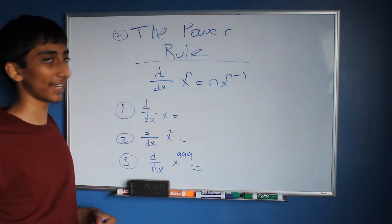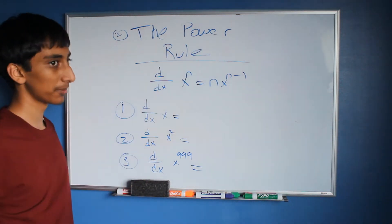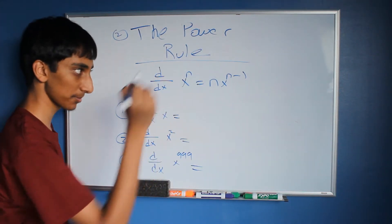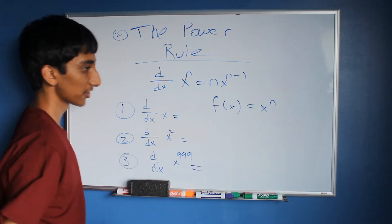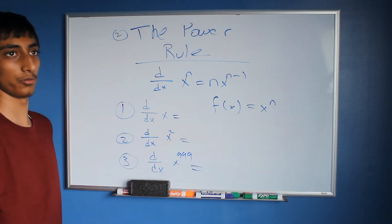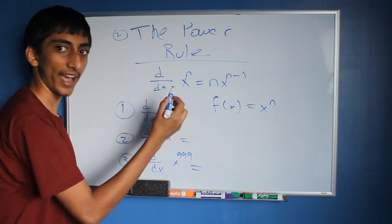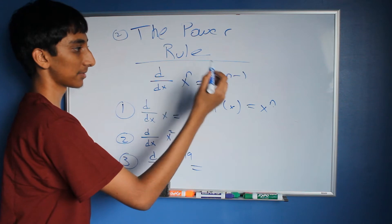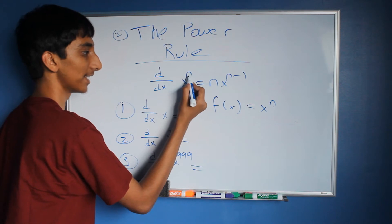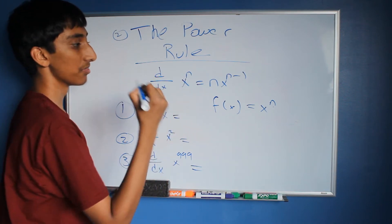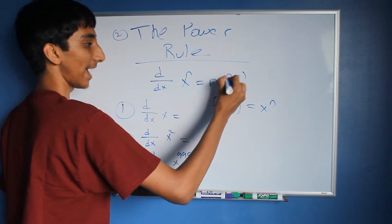Now we're going to go on to a more advanced rule called the power rule. It's called the power rule because it deals with functions with exponents. If we have f of x equals x to the n — so some exponent value, x squared, x cubed, x to the 100th — the derivative is going to be n times x to the n minus 1. Essentially, we bring the n down and subtract the exponent by 1.